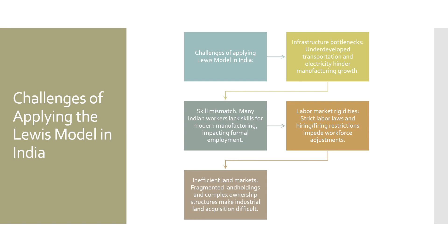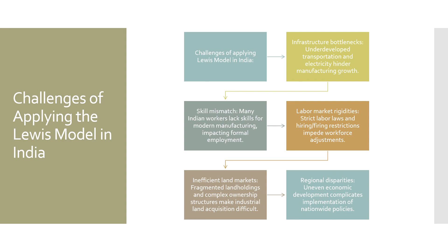Inefficient Land Markets: land markets in India are often inefficient, with fragmented land holdings and complex ownership structures, making it difficult for businesses to acquire land for industrial development. Regional Disparities: India's economic development is uneven, with some regions experiencing rapid growth while others remain largely agrarian, making it challenging to implement policies that are effective across the country.